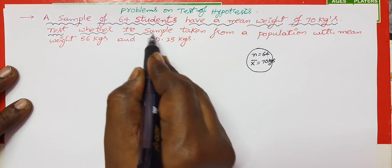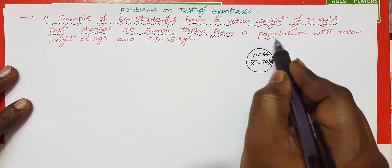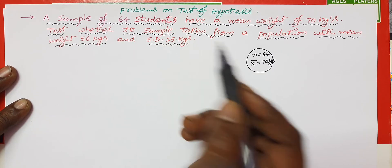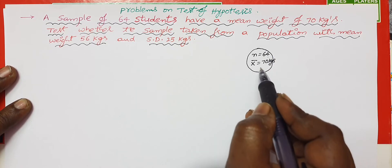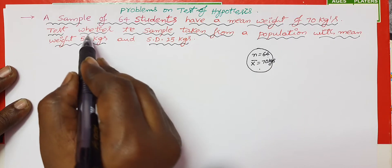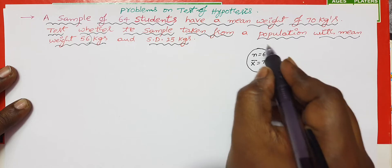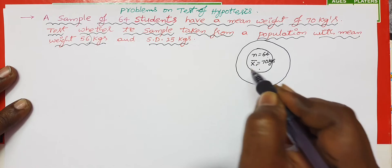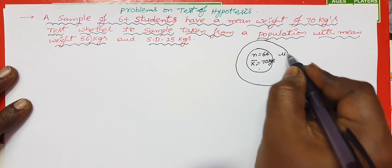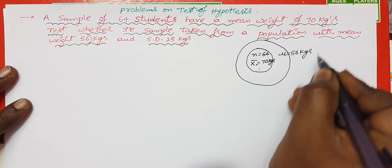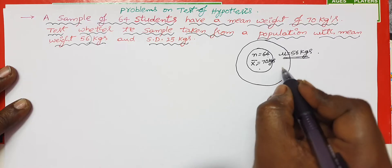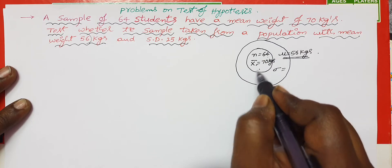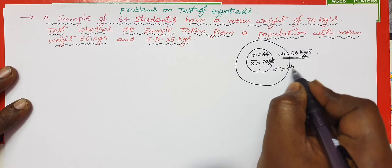Test whether this sample is taken from a population with a mean weight of 56 kgs and standard deviation of 25 kgs. So the population standard deviation is 25 kgs.